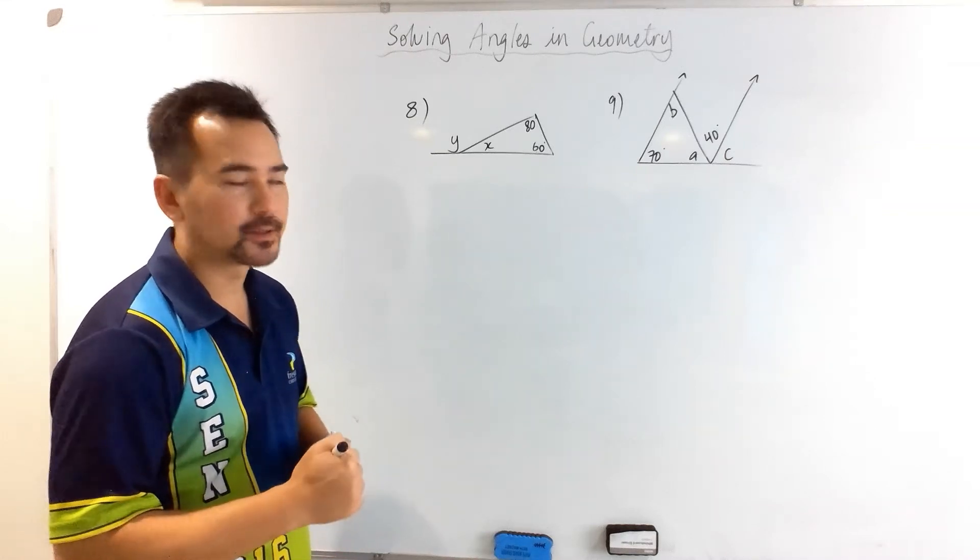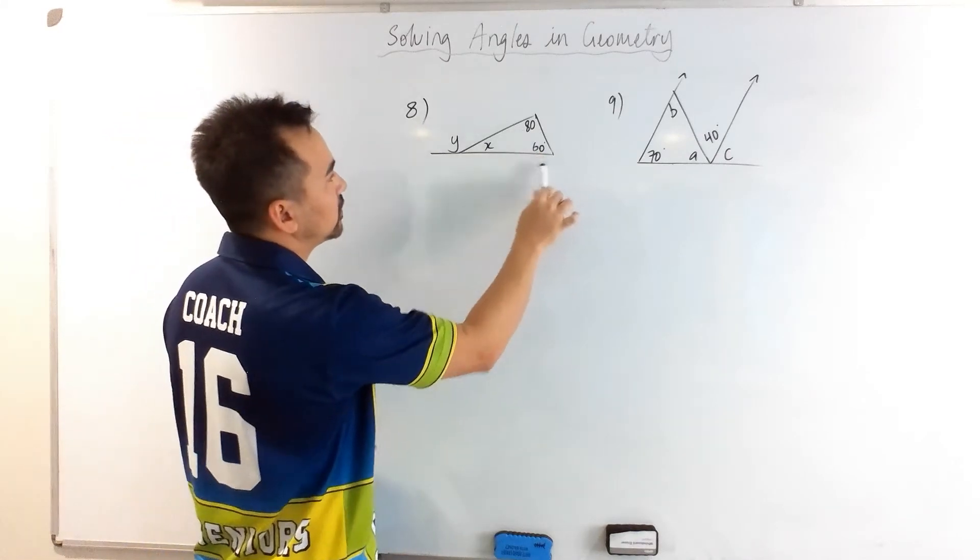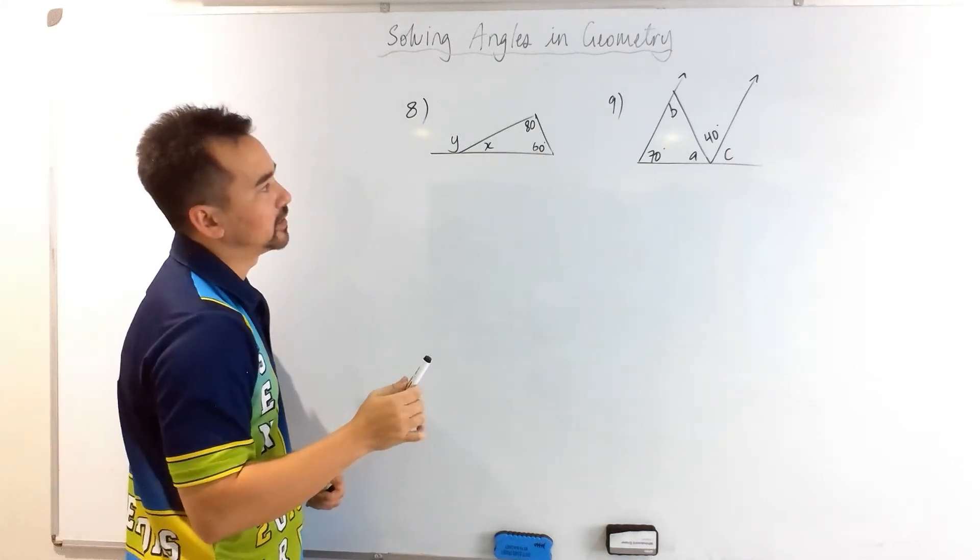Let's have a go at some of these triangle questions. Over here, we know that the angles of any triangle must sum to 180 degrees.